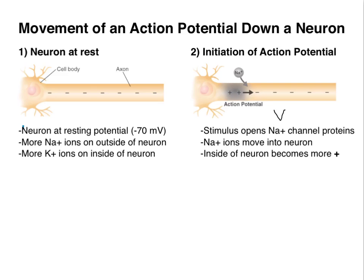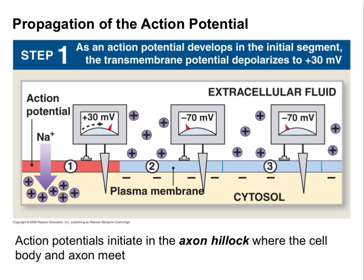From the previous video, recall that V equals I times R — V is voltage, I is current, and R is resistance (a constant). So voltage is proportional to current. If we change the voltage, as happens when the action potential is initiated, we also induce a current on the inside of the cell. At some point along the axon, the stimulus is applied, threshold is reached, sodium ions begin moving into the cell, and that segment becomes depolarized.